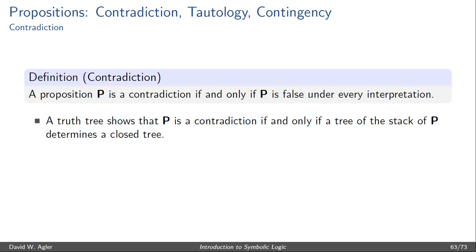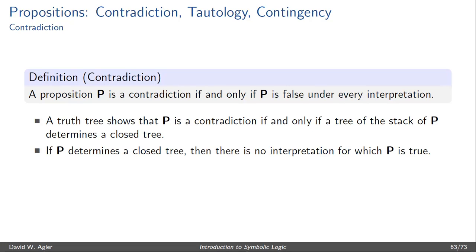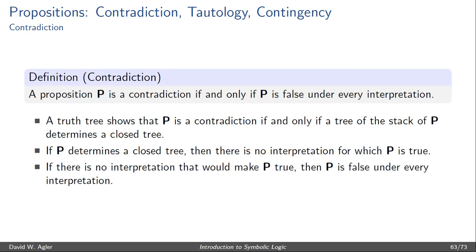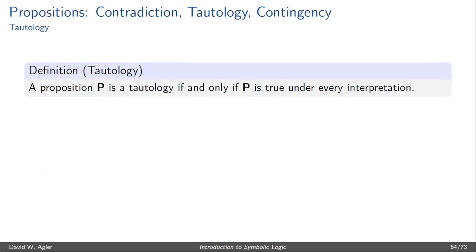A truth tree will show that a particular formula P is a contradiction if and only if the tree of the stack that consists of P determines a closed tree. If P determines a closed tree, then there's no interpretation which would make P true — no way to assign truth values to the propositional letters that would make P true. So if there's no interpretation that makes P true, then P is false under every interpretation, and P is a contradiction.